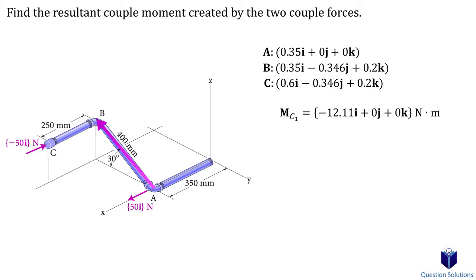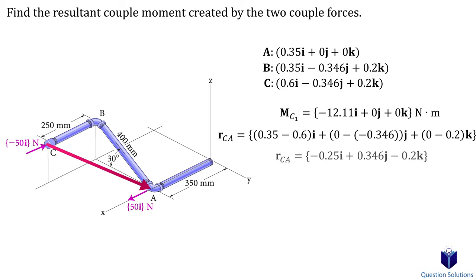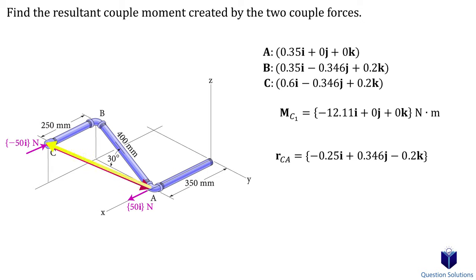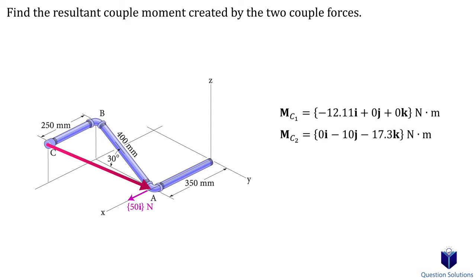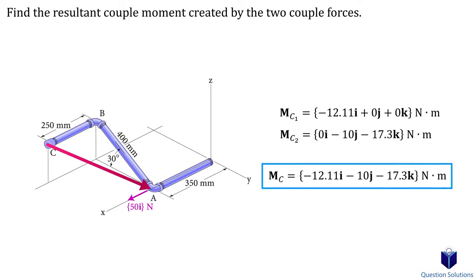Since our position vector starts at A, we ignore the force at A and consider the other force which is straight upwards in the z axis, so we can now take the cross product. For the other couple force, I will use a position vector from C to A to show that it's also possible to get the answer this way. Since we chose a position vector going from C to A, we ignore the force at C and consider the force at A, then take the cross product. The last step is to find the resultant moment by adding all the components together — i components to i, j to j, and k to k.